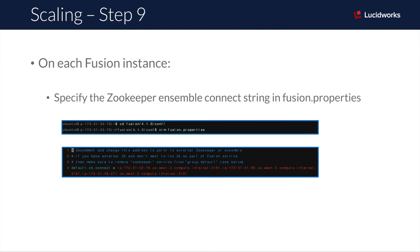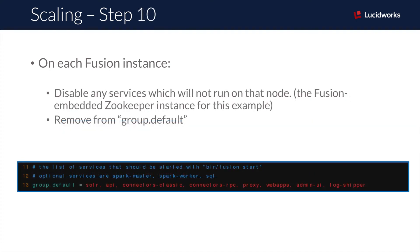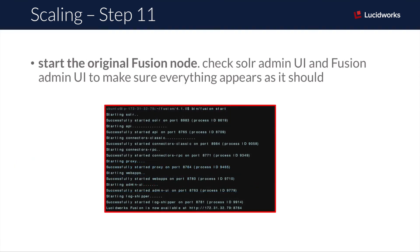In this step, you'll pass that same Zookeeper connect string into the default zkConnect property, which is found in the Fusion.properties file. While still in the Fusion.properties file, make sure to disable any Fusion services that shouldn't run on a particular node. In this example, we'll disable the embedded Zookeeper instance for each of your Fusion nodes since Zookeeper is already running externally. The group.default property controls which services are started with the bin/fusion start command, so I've removed Zookeeper from this list. Save the Fusion.properties file and start Fusion on the node from your source implementation.